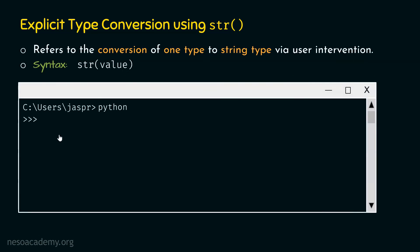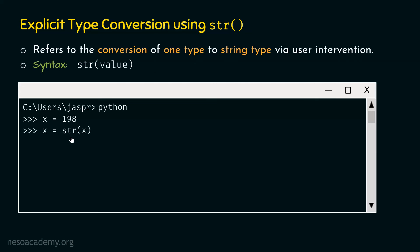Let's go to the command prompt and activate the Python interactive shell. Type x = 198, so we are asking Python to make x point to value 198. Hit enter. Now type x = str(x). We are using the str method and providing x, which means we are providing the value 198 and asking Python to convert it to a string. If we hit enter and type x again, we get 198 within single quotes, meaning str has successfully converted the integer to a string.